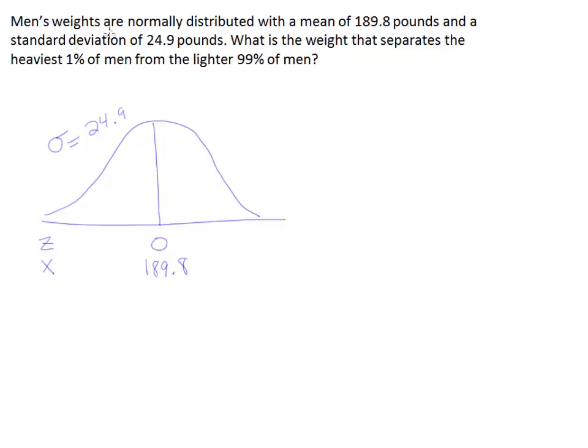In this problem, we're looking at men's weights, and they say that it's normally distributed, so I drew a bell curve. They told us the mean was 189.8, so this x-axis here is going to hold the weights of men, and that's 189.8 in the center because that's where the mean is located.